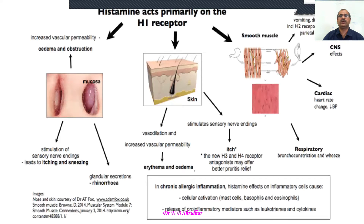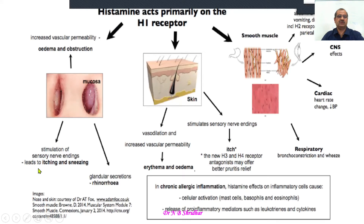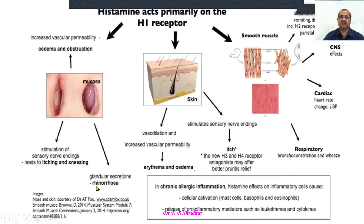H1 receptor-mediated effects include increased vascular permeability leading to edema and obstruction. There will be edema of local tissue and stimulation of sensory nerve endings, leading to itching and sneezing, especially in the upper respiratory tract. Dust allergy leads to sneezing and itching in the nose. Glandular reactions produce lot of mucus — known as rhinorrhea. On the skin, vasodilatation and increased vascular permeability lead to erythema and skin edema.